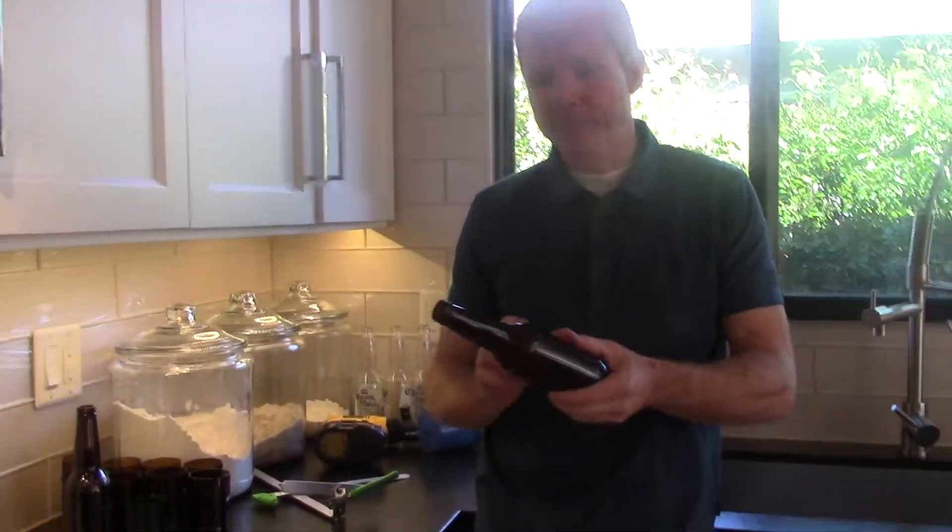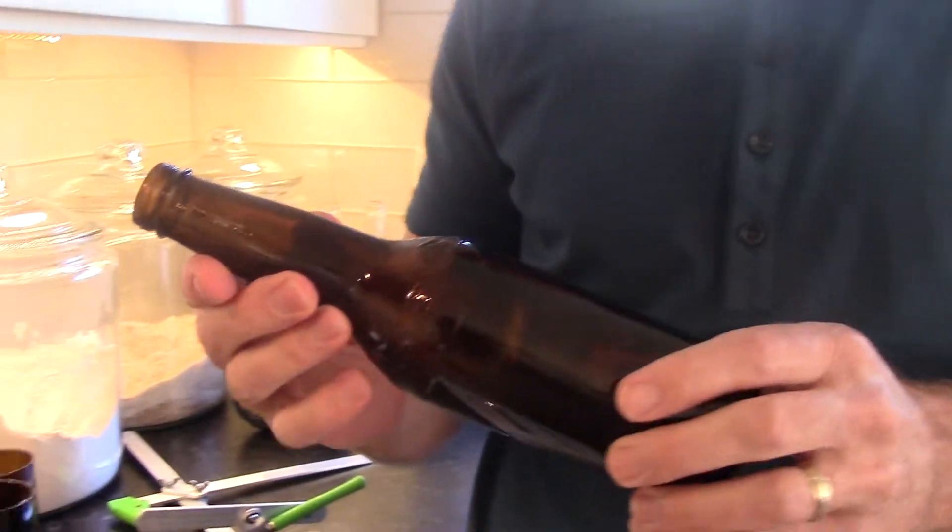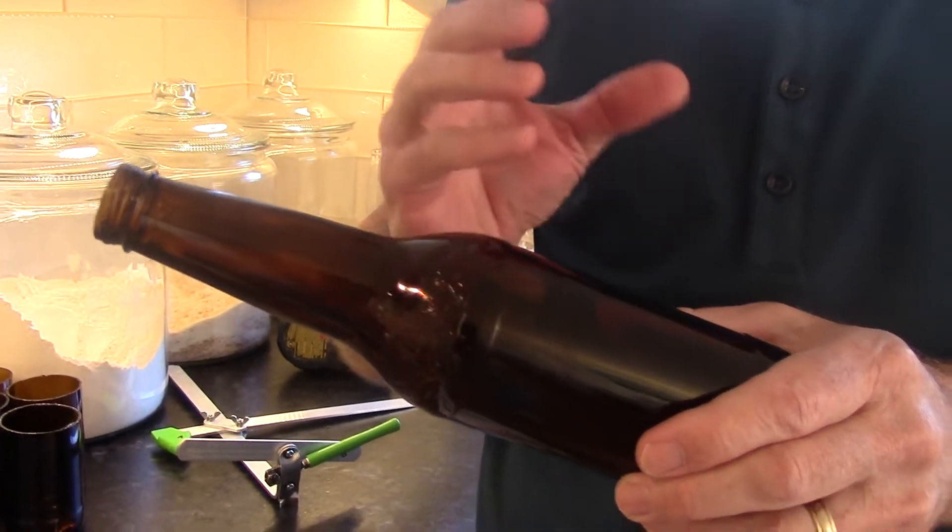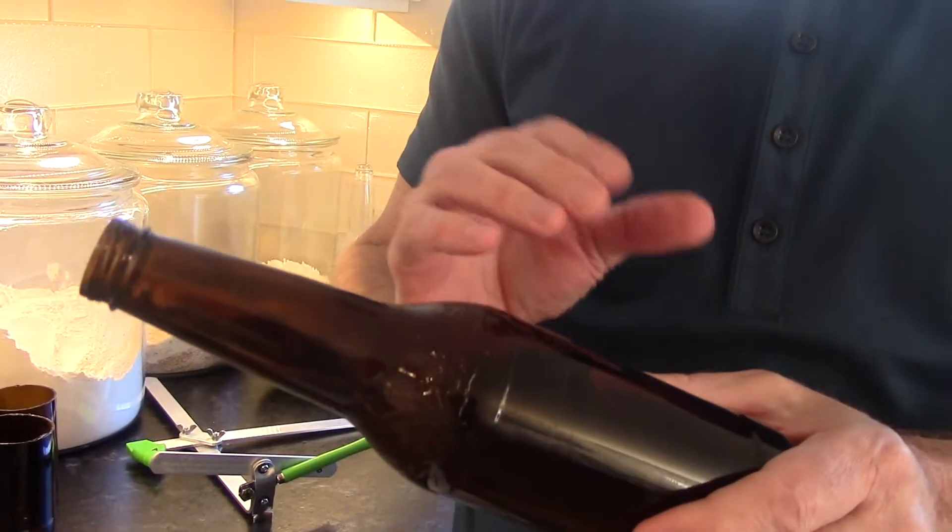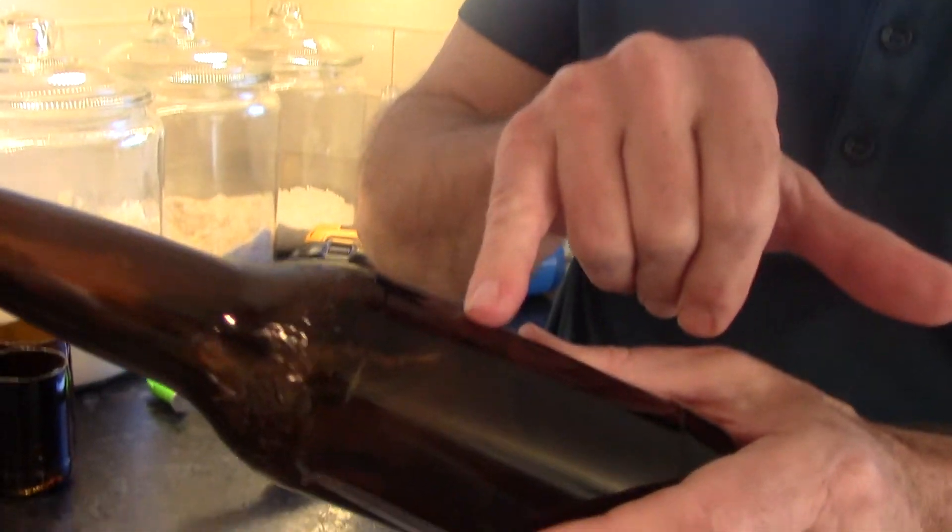Now that you've got a nice score on your bottle, you're going to want to separate it. There are a lot of videos out there on the internet, and basically what you want to do is heat the bottle and cool it down. You're stressing it, and when you stress it, it'll break on that score line there.